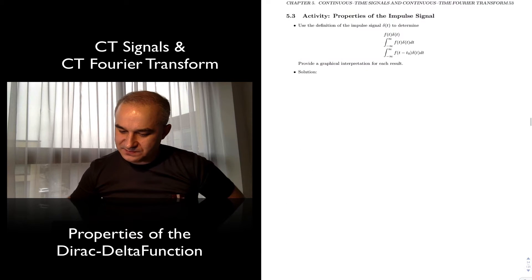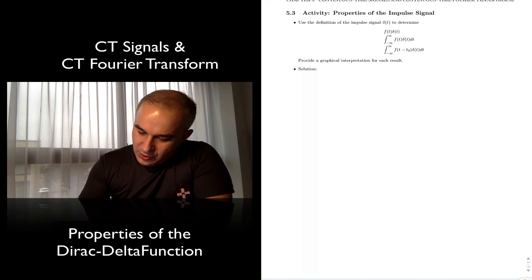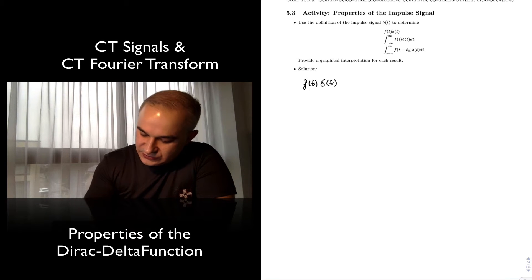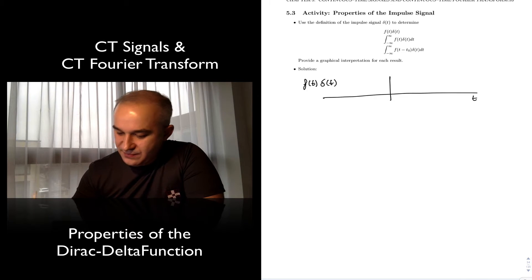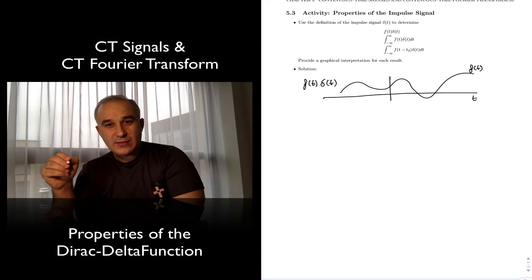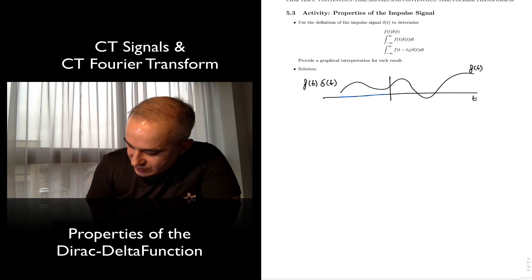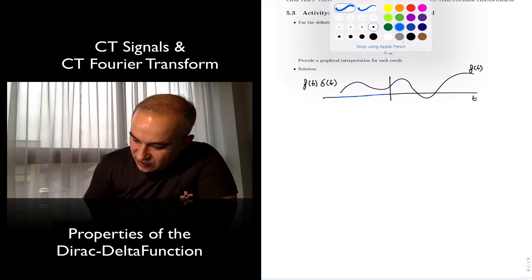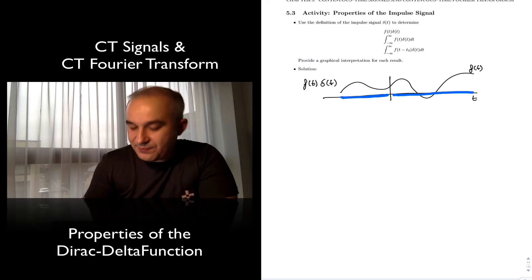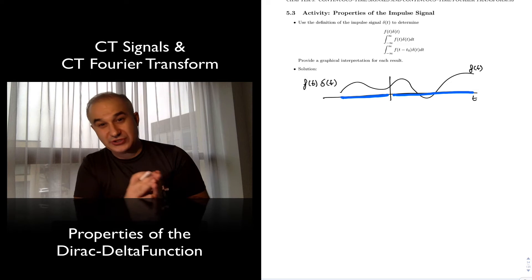So using that definition, let's determine a couple of results here, as well as provide a graphical interpretation. What is the result of multiplying a function f times the delta function? If this is time and we have an arbitrary function f, if we multiply times the delta function — remember, it is zero — sometimes students do remember the impulsive nature of the delta function but seem to forget that it is primarily zeroes. So when you multiply the delta function, the Dirac delta, with another function, it's zero times something — zeroes primarily.